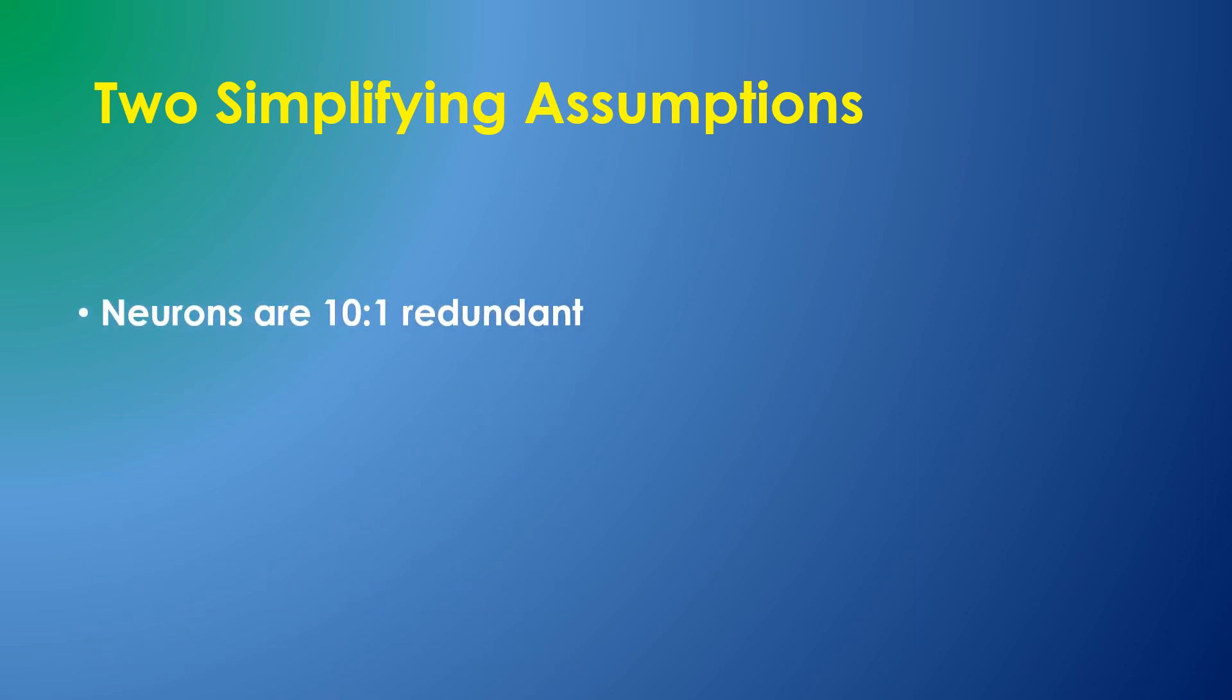First, let's assume that neurons are redundant by a factor of 10 to 1. We can be pretty sure that neurons in your brain are redundant because we can remove so many of them without diminishing your brain's performance. We just don't know what the redundancy factor is. 10 to 1 is the greatest redundancy factor I would consider reasonable.